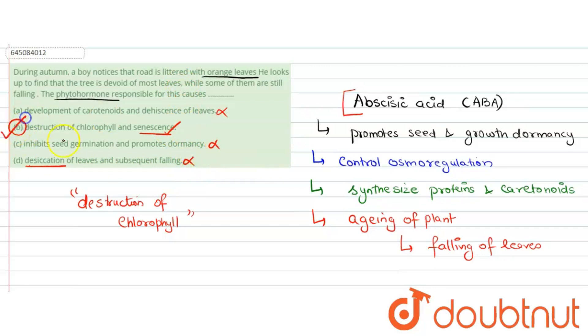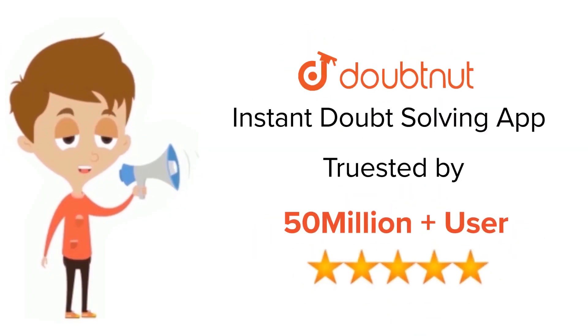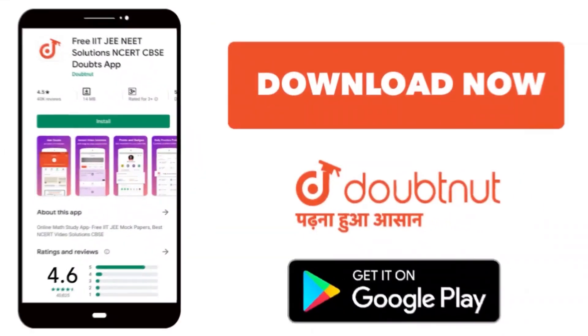Option B is our correct answer. For class 6 to 12th, IIT, and NEET level, trusted by more than 5 crore students. Download Doubtnut app today.